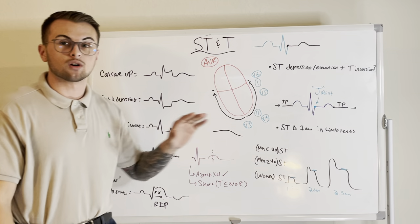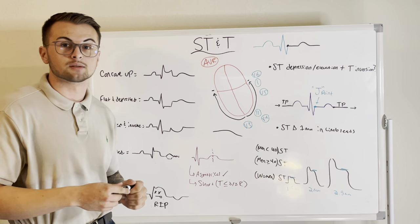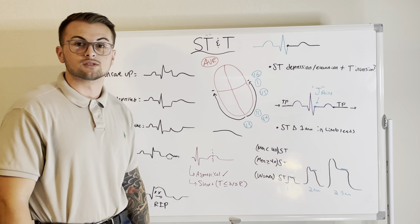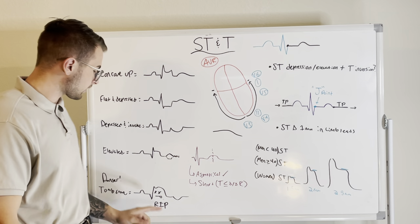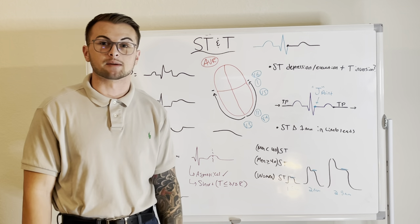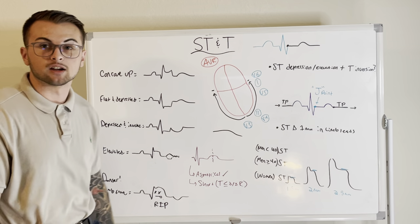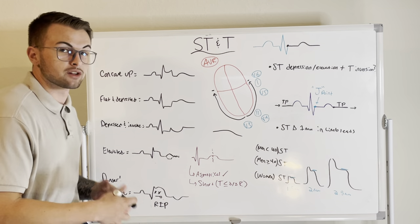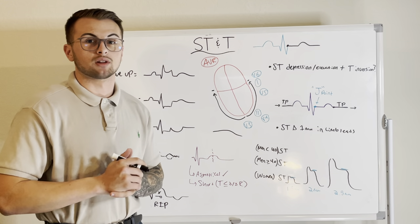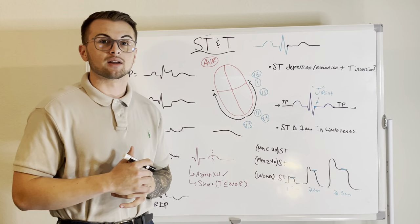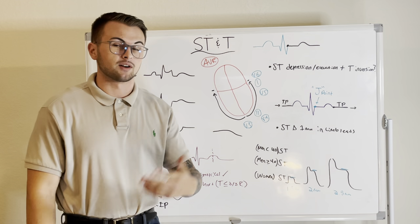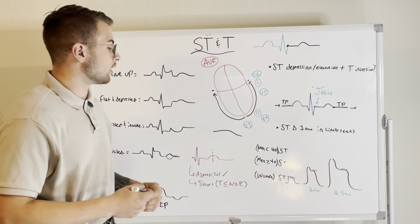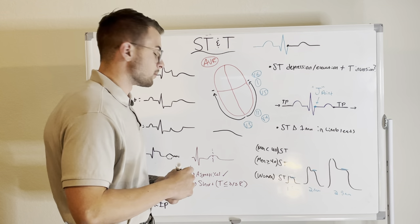Always monitor for ST elevation — this could be something serious. And then there are tombstone T's, or tombstone ST's. This is a big rounded ST segment that looks like a tombstone, and it likely indicates a massive ventricular infarction or a ventricular aneurysm. Both of these conditions do not support life — if you do not act on it, you are going to have a dead patient very soon.